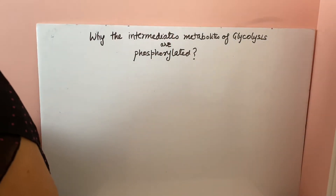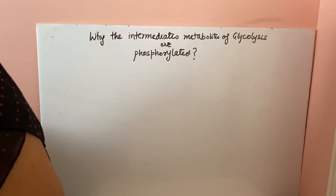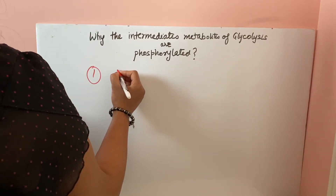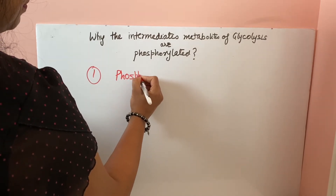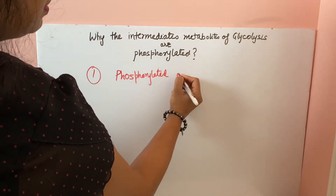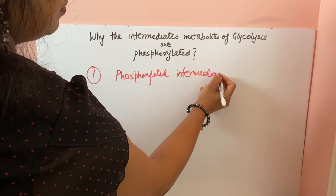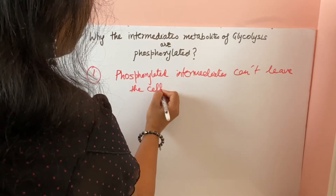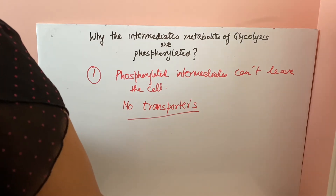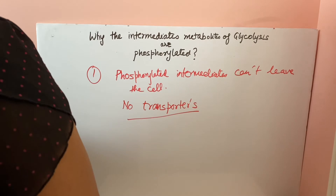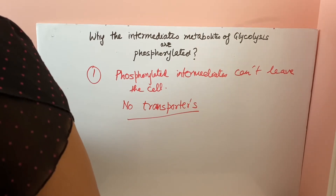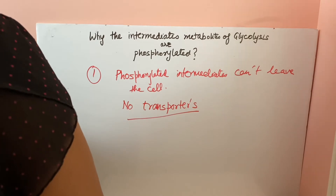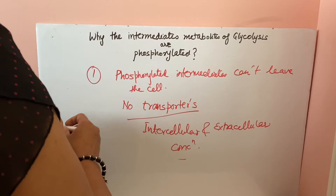Why are the intermediates of glycolysis phosphorylated? The first reason is that phosphorylated intermediates cannot leave the cell. Molecules are transported from one place to another with the help of transporters, but the plasma membrane lacks transporters for phosphorylated molecules, so they cannot leave the cell.